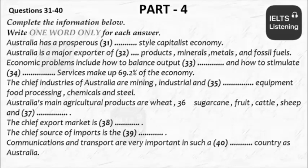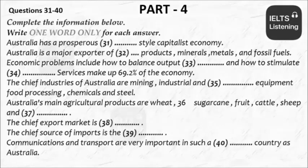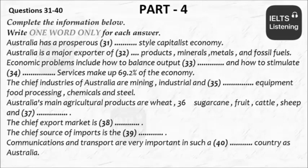Let's turn to the Australian economy. Australia has a prosperous Western-style capitalist economy. Australia is a major exporter of agricultural products, minerals, metals, and fossil fuels. Commodity prices have a big impact on the economy. Australia suffered from low growth and high unemployment typical of OECD countries in the early 1990s, but the economy has expanded at reasonably steady rates in recent years. Short-term economic problems include how to balance output and inflation and how to stimulate exports. The economy is made up like this: Agriculture 3.1%, Industry 27.7%, Services 69.2%.